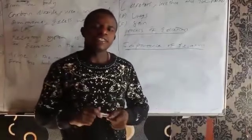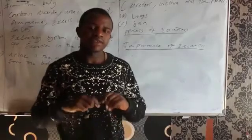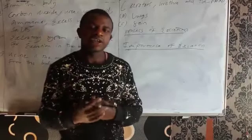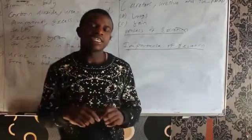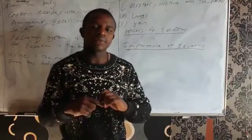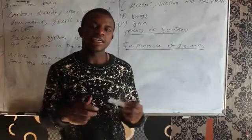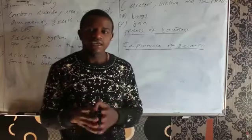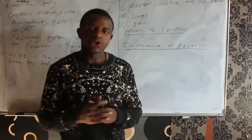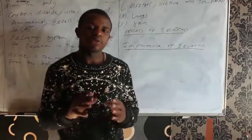The main importance of excretion is to remove the metabolic waste from the body. If these metabolic wastes are left to accumulate, they are going to change the pH of the cells. When the pH of the cells is changed, the cells are going to be denatured and die, and the whole organism is going to die. So the main importance of excretion is to remove the waste products.